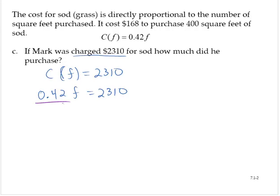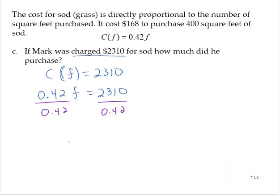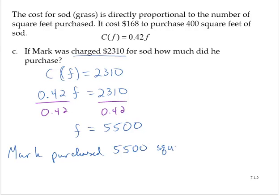Dividing through by 0.42, we get 5,500. So then f is 5,500. So Mark purchased 5,500 square feet of sod.